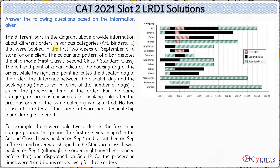In this question, we have a stacked bar graph in the horizontal direction. Normally, you must have seen a stacked bar chart in the vertical direction — this one is in horizontal direction. The bars provide information about different orders in various categories, which are art, binders, and so on.